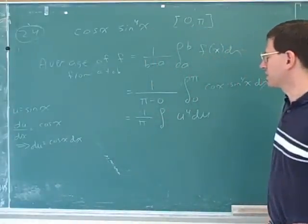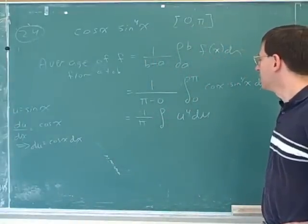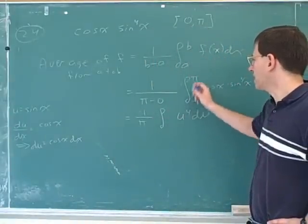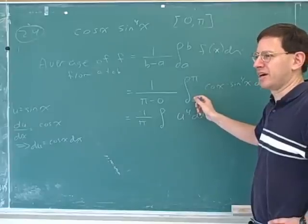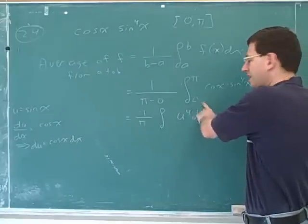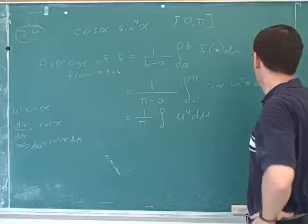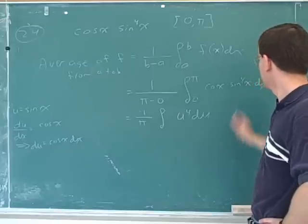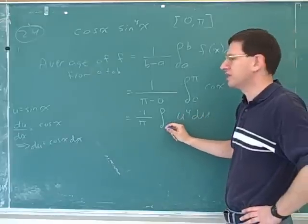I think the method used is okay, but we can check it using a different method. When we change the variable, we change our numbers of integration over here. These represented x's, and these represent u's. Well, when x is zero, what should u be? What should u be? If x is zero, what should u be?